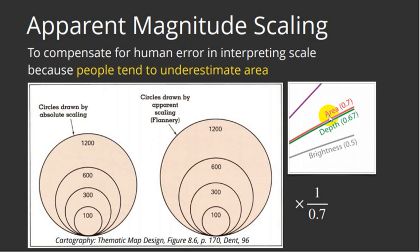So there is this thing called magnitude scaling to account for our misperceptions. So on the left side are circles that are drawn proportionally correct. So the value of 100, this is a value of 1200. This is proportionally the correct amount larger. Nice grammar. This one has been adjusted using apparent magnitude scaling. And the way we did that is we took this exponent and basically multiplied the area by the inverse of the exponent and just basically blew it up. So if we multiply by the inverse, we're going to get a larger number because it's a fraction. And so we're inflating these areas just enough to account for our misperceptions.